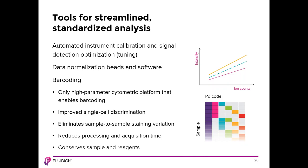The third tool is barcoding. Mass cytometry is the only high-parameter cytometry platform which enables barcoding. Fluidigm's barcoding kit allows staining of up to 20 samples, each with a unique three-digit palladium code. Barcoding is a unique and highly valuable application that eliminates tube-to-tube variability when staining, reduces reagent use, saves time during both sample preparation and acquisition, and enables better single-cell discrimination.